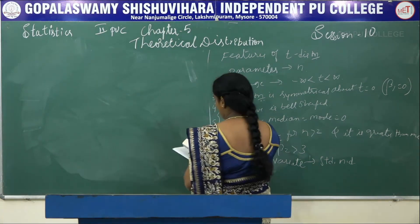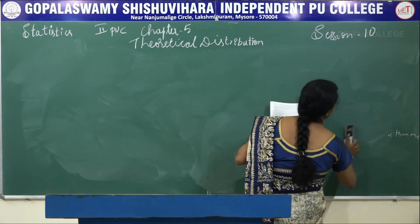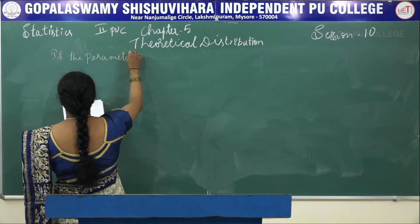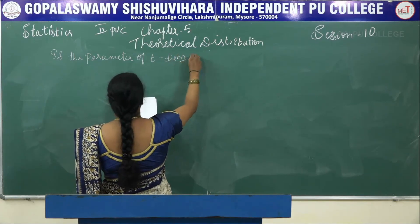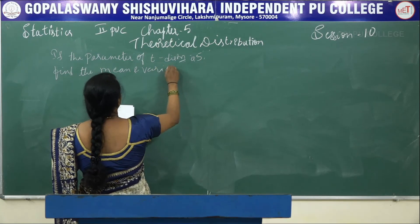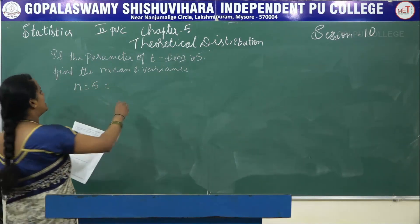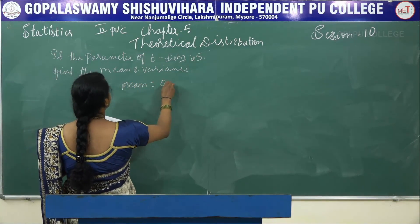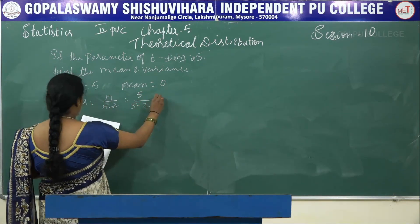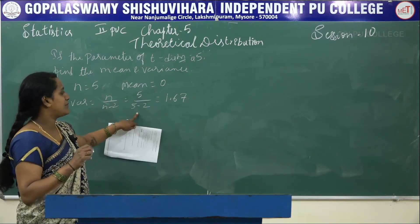Problems on T distribution. Problem 1: If the parameter of T distribution is 5, find the mean and variance. Given n = 5: In T distribution, mean = 0 because T is symmetric. Variance = n/(n − 2) = 5/(5 − 2) = 5/3 = 1.67.